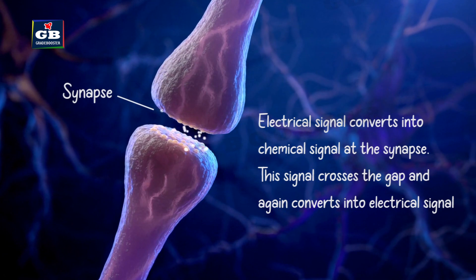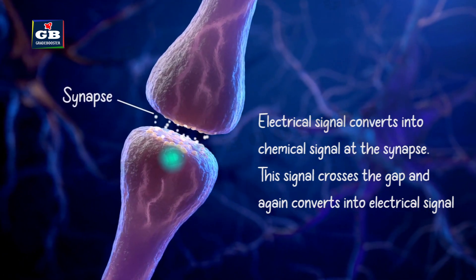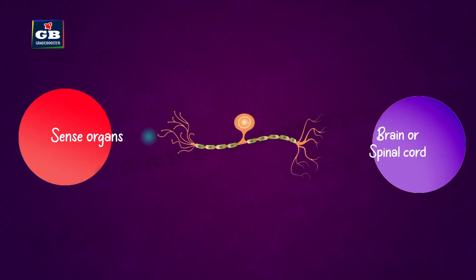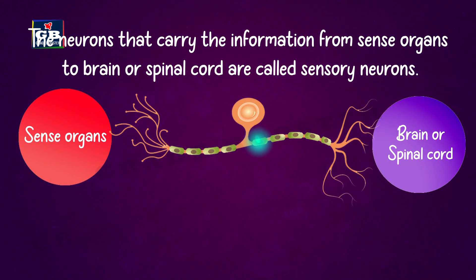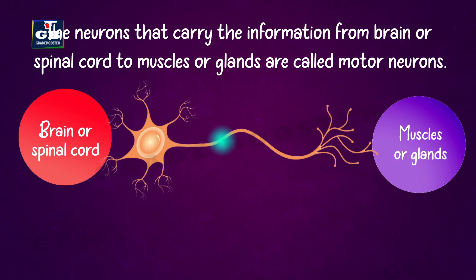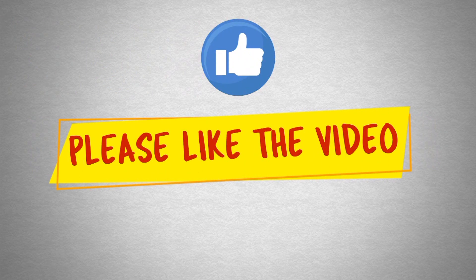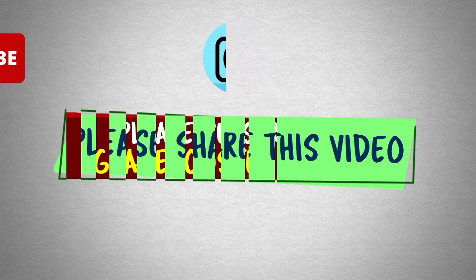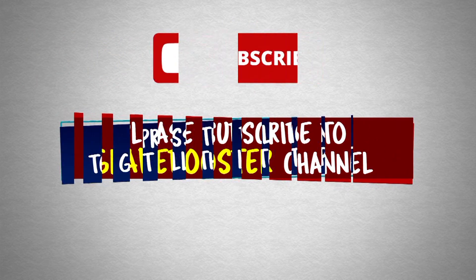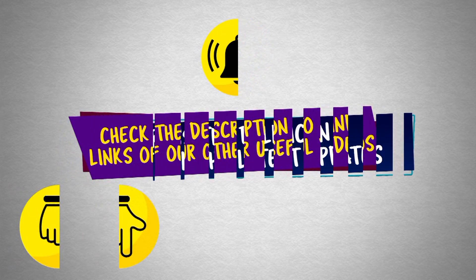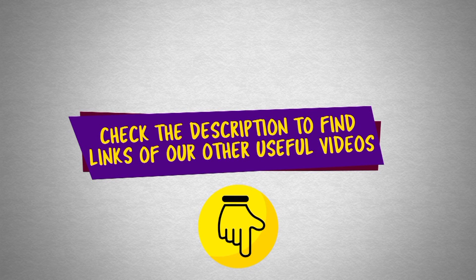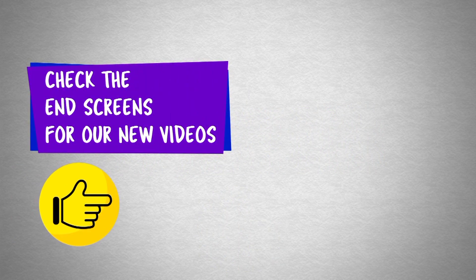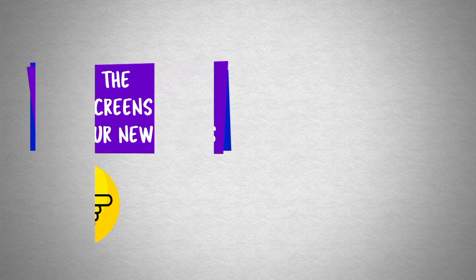This chemical crosses the gap and reaches the dendrites of another neuron, where it is again converted into an electrical signal. The neurons that carry information from sense organs to the brain or spinal cord are called sensory neurons. The neurons that carry information from the brain or spinal cord to muscles or glands are called motor neurons.